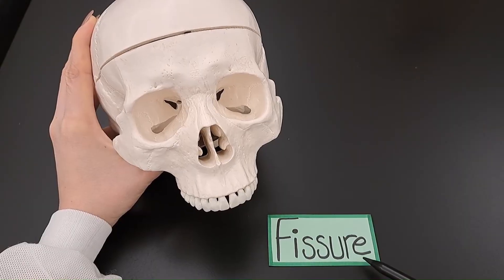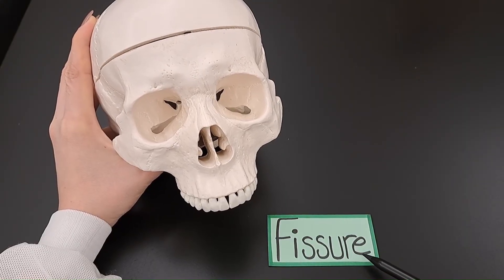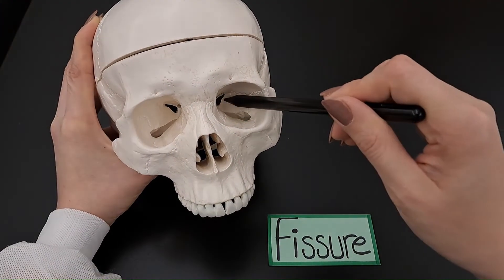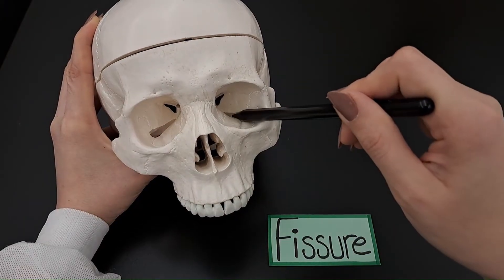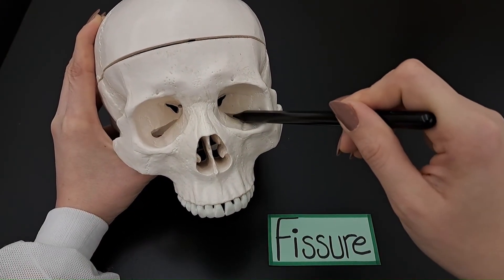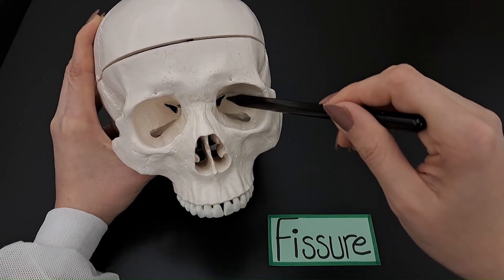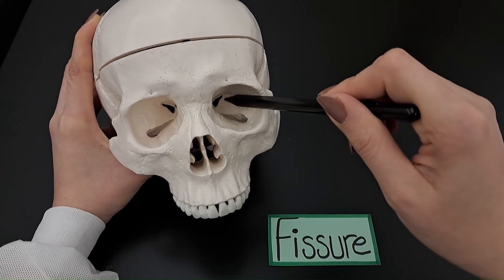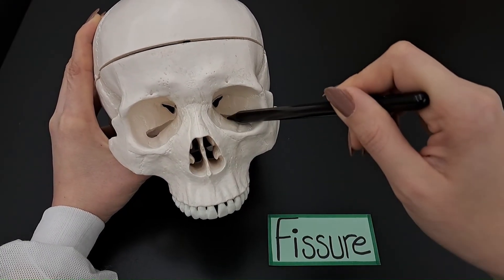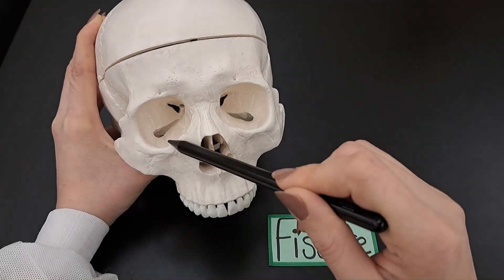Starting with the first opening through the bone, a fissure, which is a narrow slit-like opening. An example: we have the superior orbital fissure and the inferior orbital fissure in both orbits.